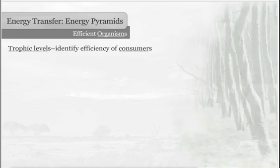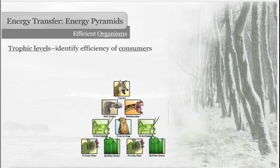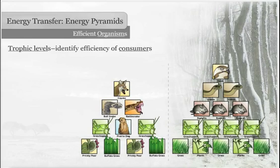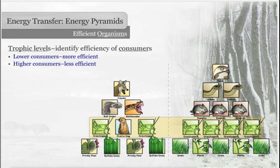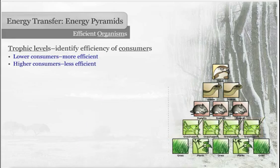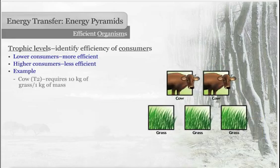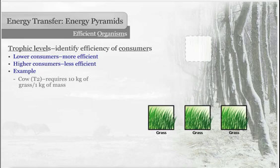The trophic level of an organism helps identify how efficient a consumer it is. The lower a consumer is on the pyramid, the more efficient it is. Consumers who are higher on the energy pyramid are less efficient. For example, cattle are primary consumers, level T2, who must consume 10 kilograms of grass to maintain each kilogram of mass.